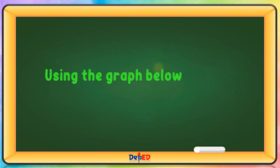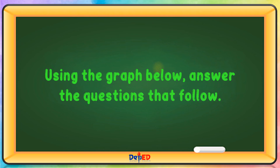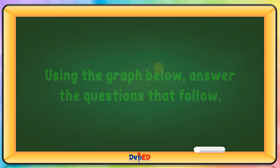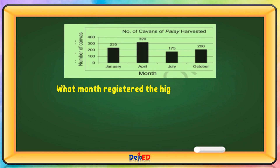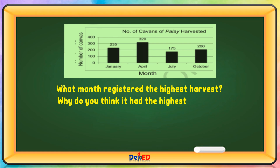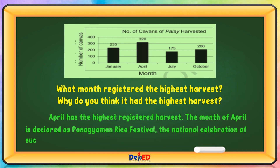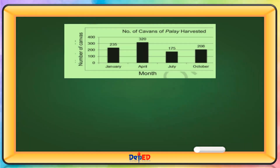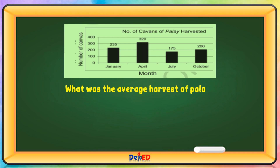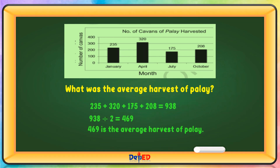Let's do this. Using the graph below, answer the questions that follow. What month registered the highest harvest? April has the highest registered harvest. Why? The month of April is declared as Panagyaman Rice Festival, the national celebration of successful rice harvest. What was the average harvest at Palae? 235 plus 320 plus 175 plus 208 equals 938. 938 divided by 2 equals 469. 469 is the average harvest of Palae.